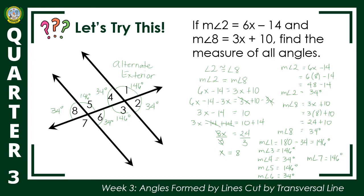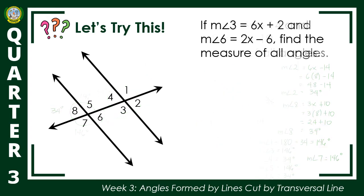We now have the measures of all the angles. To summarize: first, determine the relationship between the two given angles. Then make an equation based on that relationship and solve for the value of x. After that, substitute the value of x into the original expressions. Then find the rest of the angles. Let's have another example: if the measure of angle 3 is 6x plus 2 and the measure of angle 6 is 2x minus 6, find the measure of all angles.